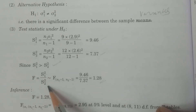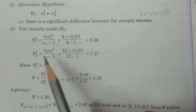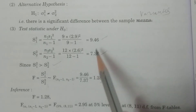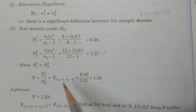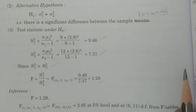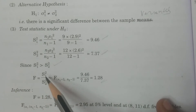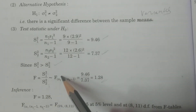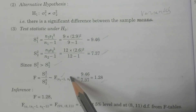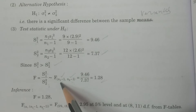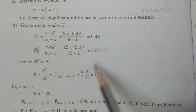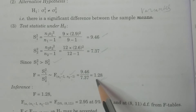F is equal to S2 squared by S1 squared (using the larger variance in the numerator). F follows an F-distribution with N1 minus 1 and N2 minus 1 degrees of freedom, where N1 minus 1 is the numerator degrees of freedom and N2 minus 1 is the denominator degrees of freedom. The calculated value is 9.46 divided by 7.37, which equals 1.28.